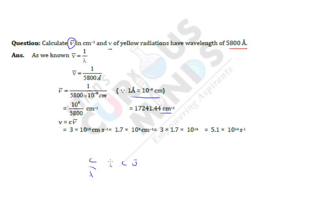So c into wave number, c is 3 into 10 raised to 8, but okay here also they have converted to centimeters so it is 3 into 10 raised to 10. So 3 into 10 raised to 10 into 1.7 into 10 raised to 4 cm inverse.